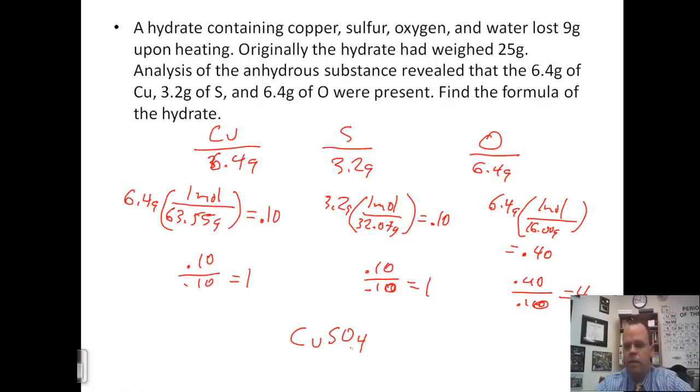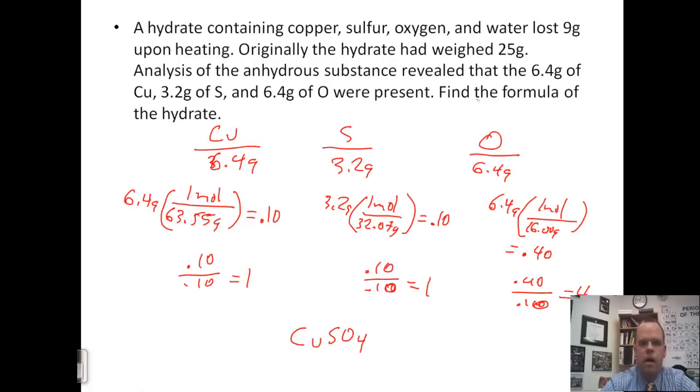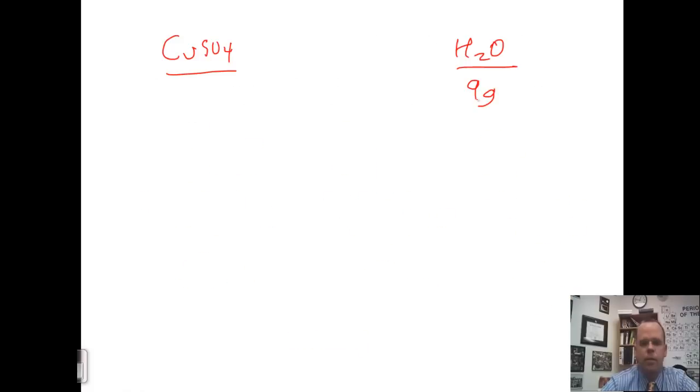Now I'm going to flip to a new screen so that we can do the hydrate part of the problem. So we have CuSO4 and H2O. We know that the H2O lost 9 grams, and the hydrate originally weighed 25.00. So 25 minus 9, which would be 16 grams.